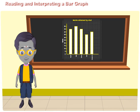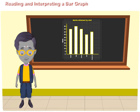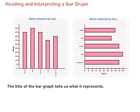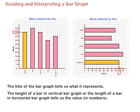Let us learn how to read and interpret a bar graph. The title of the bar graph tells us what it represents. The height of a bar in a vertical bar graph, or the length of a bar in a horizontal bar graph, tells us the value in numbers.